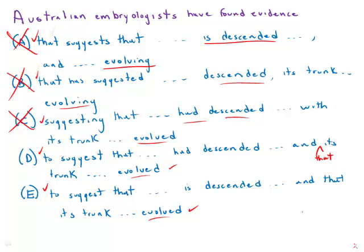Elephants walking around today had elephant ancestors, and insofar as they had ancestors, they are right now descended from those ancestors. So 'is descended' or 'are descended' — using the present tense — is correct to describe the situation of something in the present time that had ancestors in the past. We need the present tense, not the past tense. So the past tense is wrong and the present tense is correct.